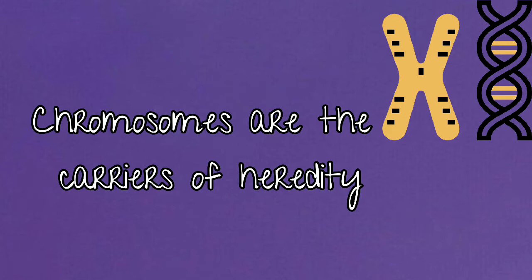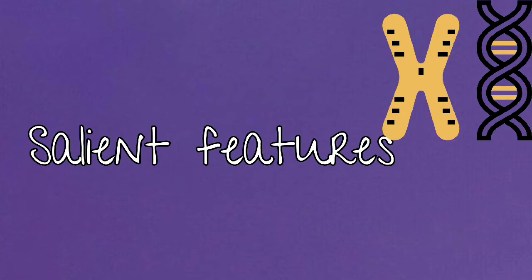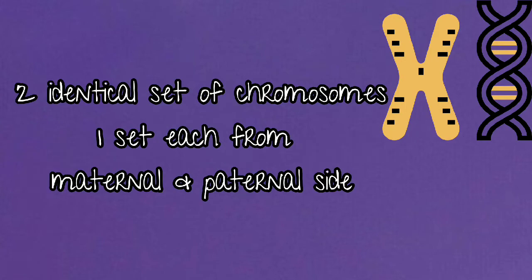This concept that chromosomes are the carriers of heredity is known as the chromosome theory of heredity. Genes are mainly located on chromosomes. The salient features of this theory are that the somatic cells of an organism, which are derived by the repeated divisions of the zygote, are diploid — that is, they consist of two identical sets of chromosomes. One set is received from the mother, which is haploid, through the ovum, called maternal, and the other set, called paternal, through the sperm, is inherited from the father.